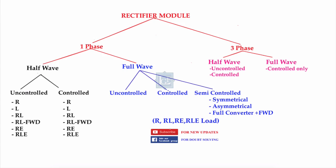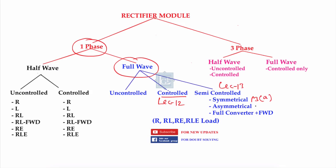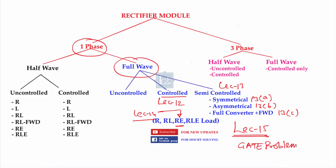In this way we have completed the single-phase full-wave rectifier series: controlled rectifier was lecture 12, semi-controlled was lecture 13 (divided into 13a, 13b, 13c), and lecture 14 covered the controlled rectifier with RE type of load. In the next lecture, lecture 15, we will solve previous-year GATE problems from 1991 to 2017 related to single-phase full-wave rectifiers. If you understood the concept, please like this video. For doubt-solving, join our Facebook group. Thanks for watching.